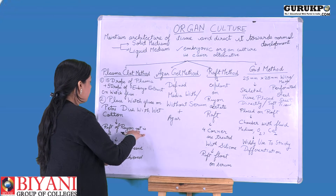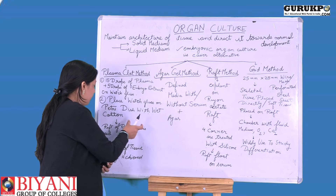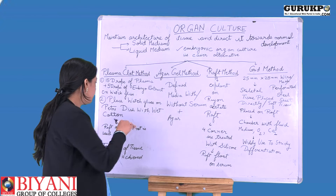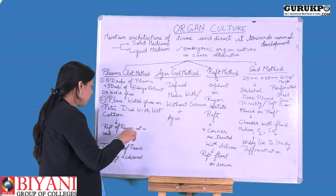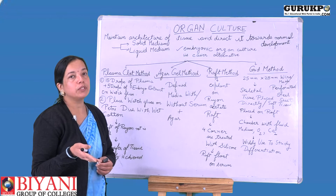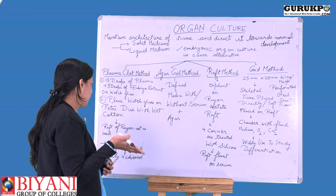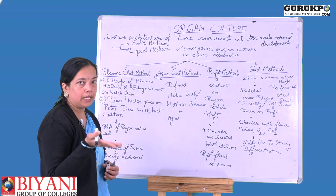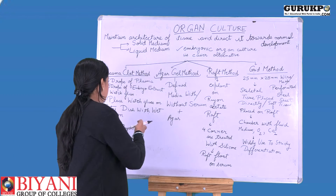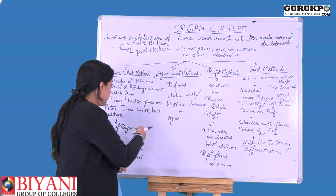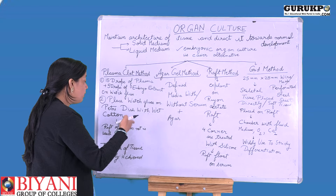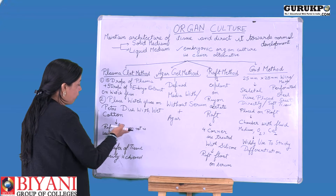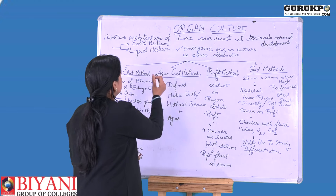We can place the tissue directly on the plasma clot or use a raft of rayon net. The raft of rayon net is used so that the tissue remains on the net while the media is below it. When the media gets exhausted and we want to transfer the tissue to fresh media, it becomes easier to do so without damage to the tissue.